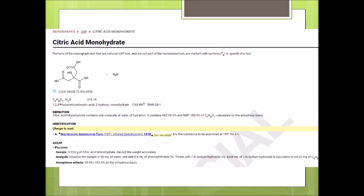There is a monograph for citric acid monohydrate and the assay method is very similar to the previous monograph. For anhydrous form, the titration is done using sodium hydroxide.